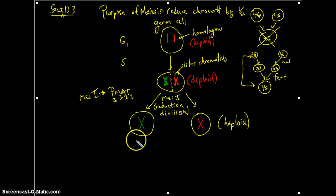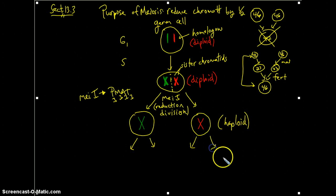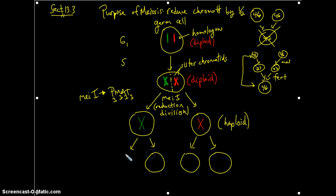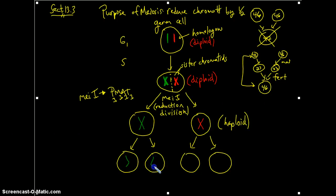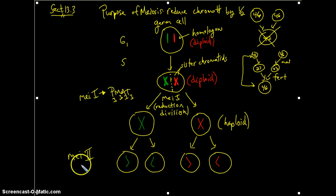Now, during meiosis II, we're going to take these two cells that were created during meiosis I and divide these cells. Now, when that happens, what you're going to do is separate sister chromatids. So meiosis I, you are separating homologous chromosomes. Here in meiosis II, you're going to separate sister chromatids.